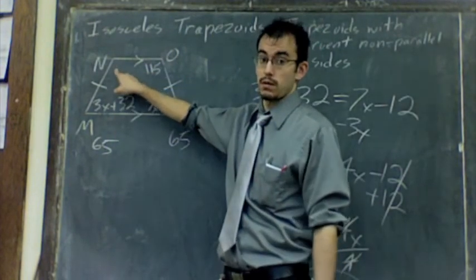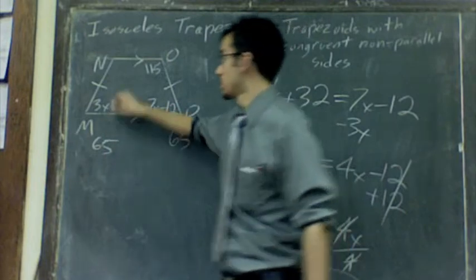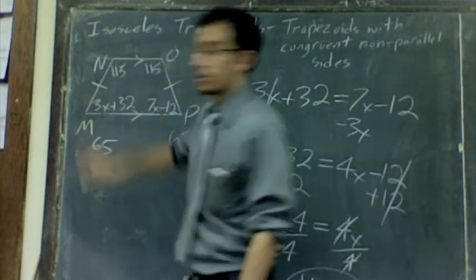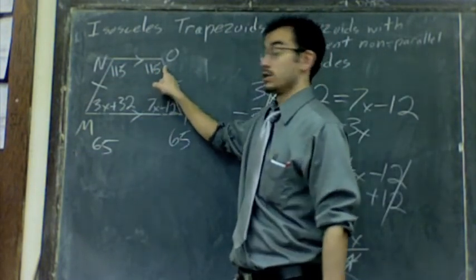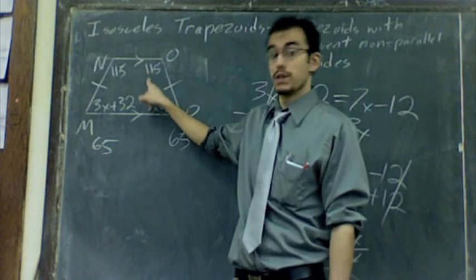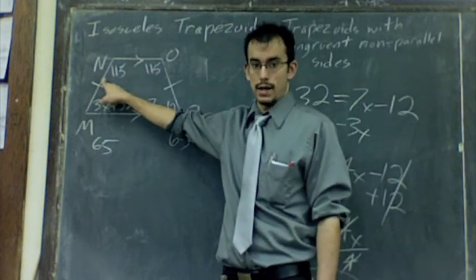And this angle would be the same thing. Because again, it would be 180 minus 65. Another reason you could say that is, well, these are base angles in an isosceles trapezoid. So if this is 115, that has to be 115 as well.